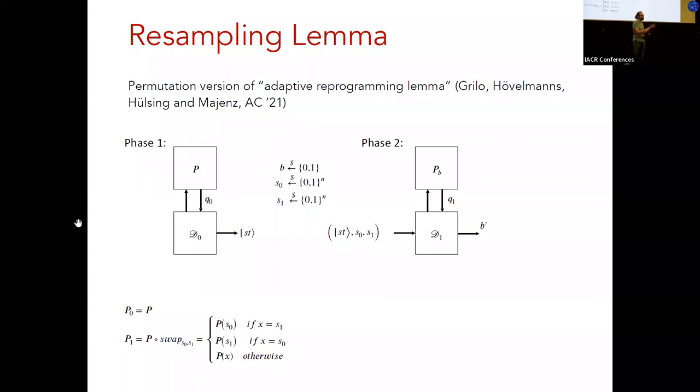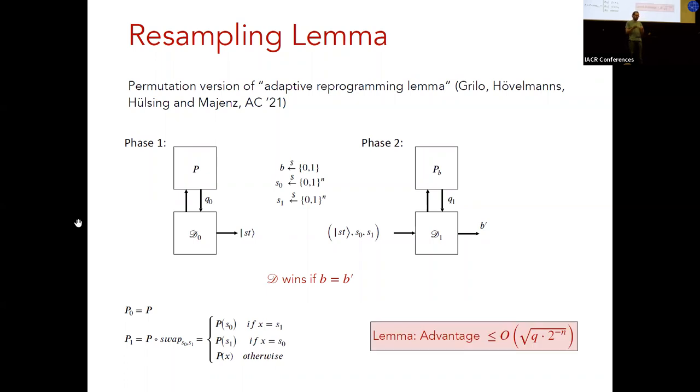And this is basically a game where an adversary needs to detect whether the permutation has been modified. But in a way, that's consistent with the distribution of a random permutation. And I don't think I have time to describe the game in detail. But we can show that this kind of change in the permutation can only be detected with a small advantage.